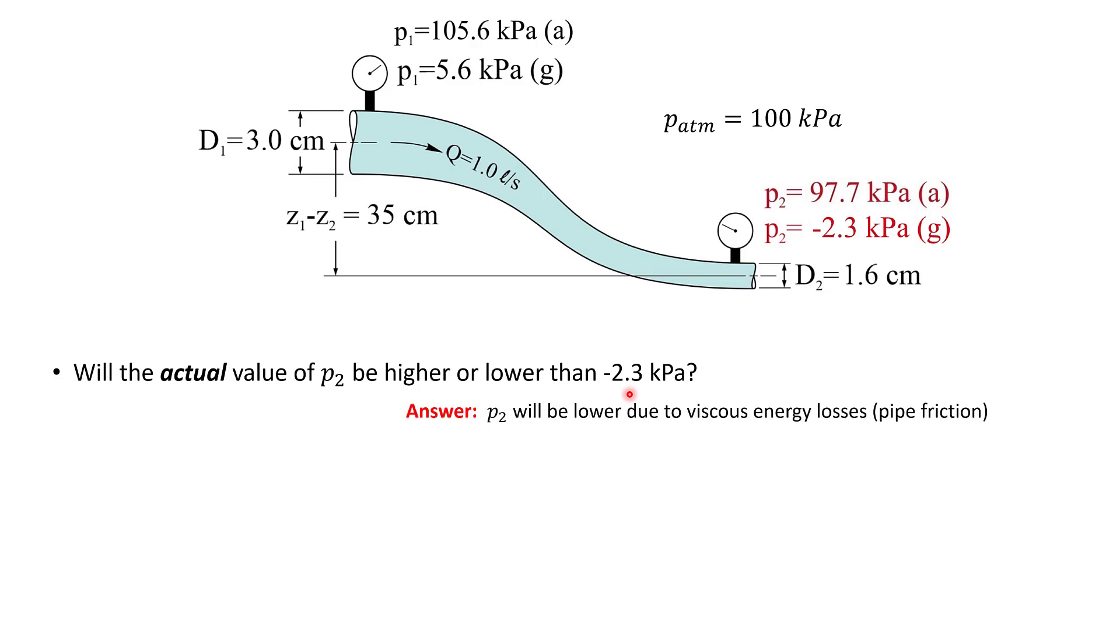The answer is that P2 will be lower than this value because we've neglected viscous losses, so-called pipe friction. There are energy losses in the pipe due to the shear stress at the pipe wall and due to flow turbulence.